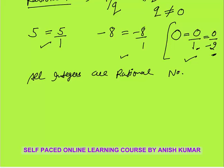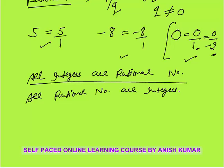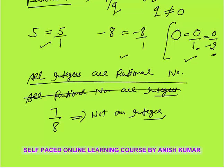Because 5 is an integer, minus 8 is also an integer, 0 is also an integer — so all integers are rational numbers. Is the vice versa statement also true? If I say all rational numbers are integers, is this statement true? This statement is not true, because 7 by 8 is also a rational number. By definition, 7 by 8 can be written in the form P by Q where P and Q are integers, but 7 by 8 is not an integer. So the statement 'all rational numbers are integers' is not true.